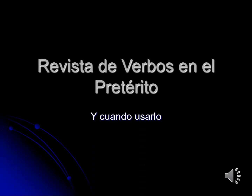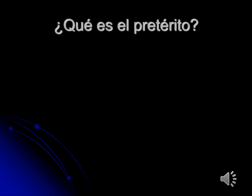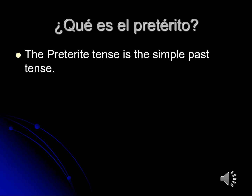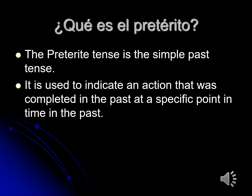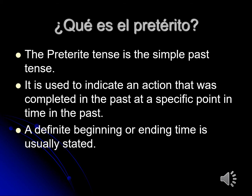Revista de verbos en el pretérito y cuando usarlo. We're going to review preterite tense verbs and when to use them. ¿Qué es el pretérito? What is the preterite? The preterite tense is the simple past tense. It's used to indicate that an action was completed in the past at a specific point in time. Usually, there's a definite beginning or ending time stated.